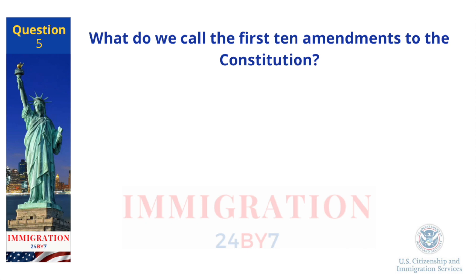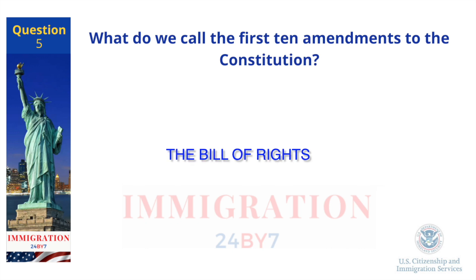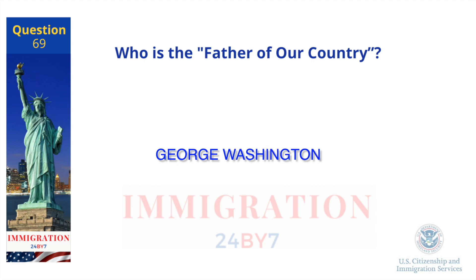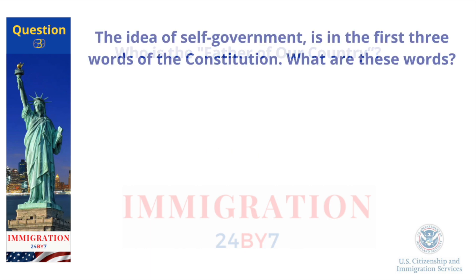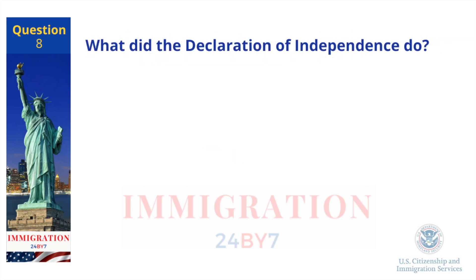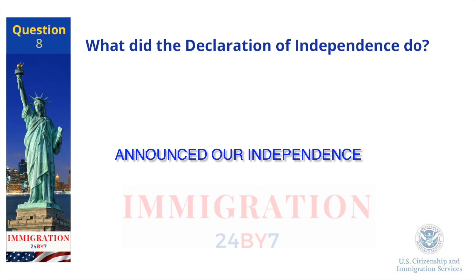What do we call the first ten amendments to the Constitution? The Bill of Rights. Who is the father of our country? George Washington. The idea of self-government is in the first three words of the Constitution. What are these words? We the People. What did the Declaration of Independence do? Announced our independence.